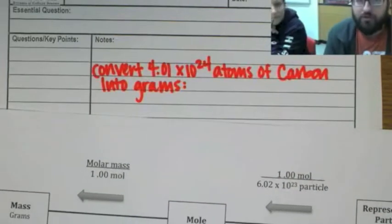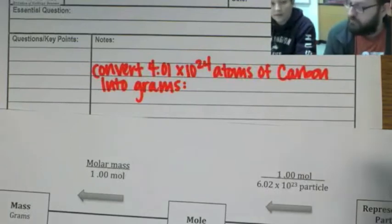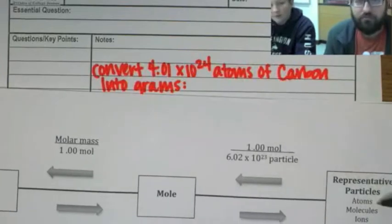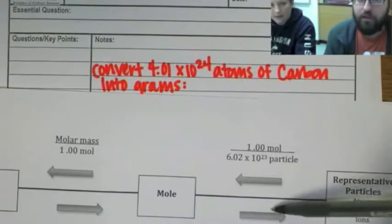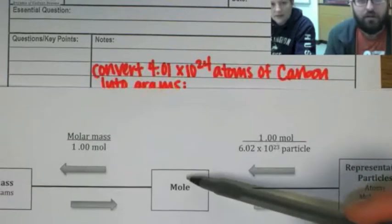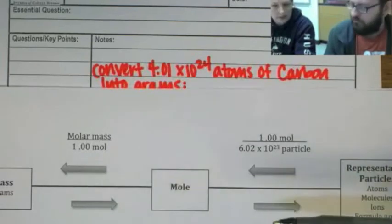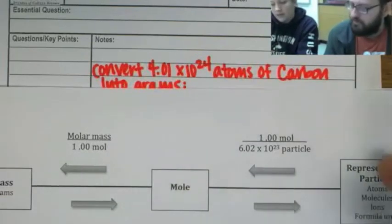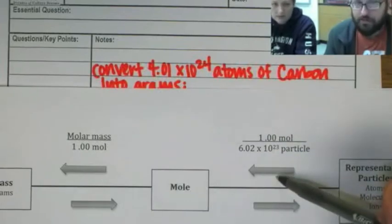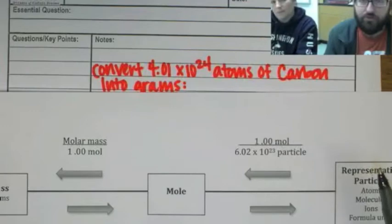So we're going to convert 4.01 times 10 to the 24 atoms of carbon into grams. Okay, so if I look at this, I am starting with atoms, so I'm going to go to the left. Okay. So it says I'm going to want to divide by 6.02 and then use the molar mass. Okay, so I need to do dimensional analysis, right? Right.